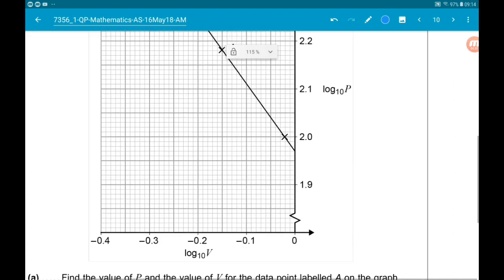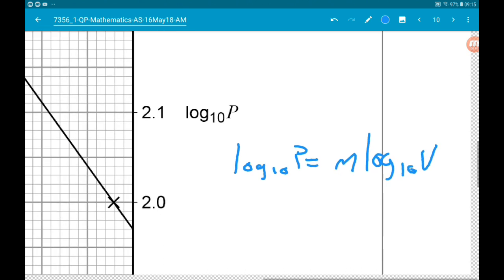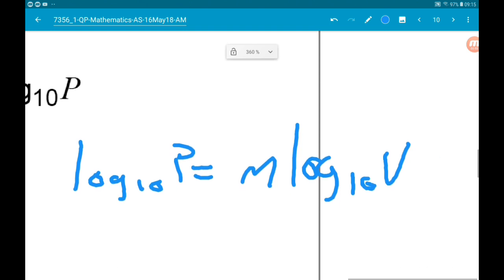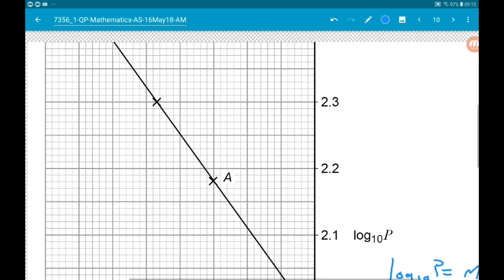So remember the general equation of a straight line: y equals mx plus c. Here this graph is of the form log base 10 of P is equal to m log base 10 of V plus c. The reason it's in terms of logs is because on our y-axis we have log base 10 of P and along our x-axis we have log base 10 of V.